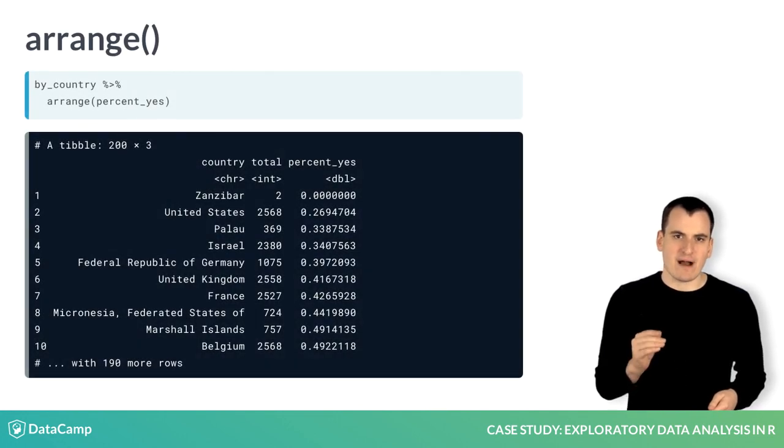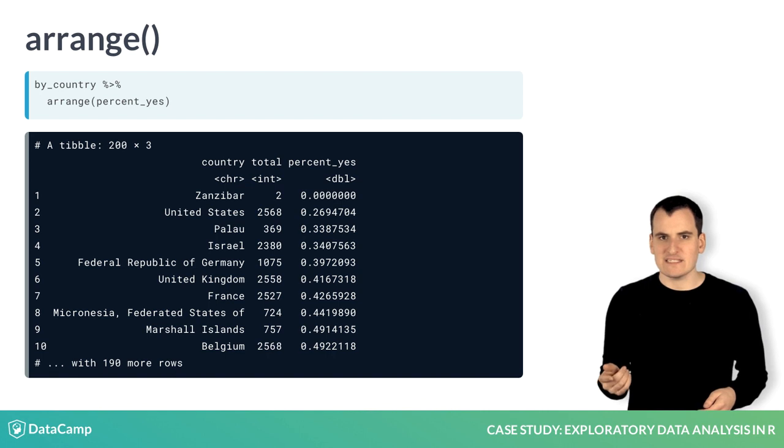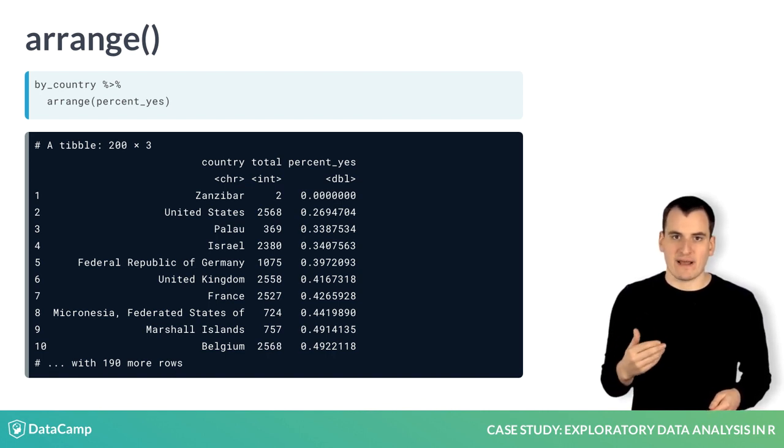Here we could pipe By Country to the arrange operation, telling it to sort by the percent yes column. We'd see that Zanzibar is the country that voted yes the least often in the dataset, followed by the United States.